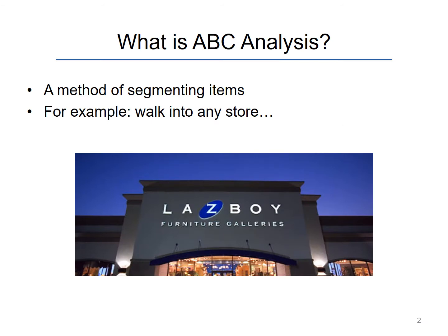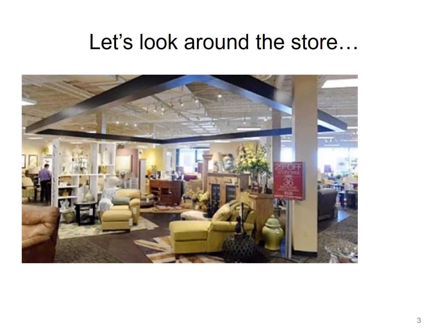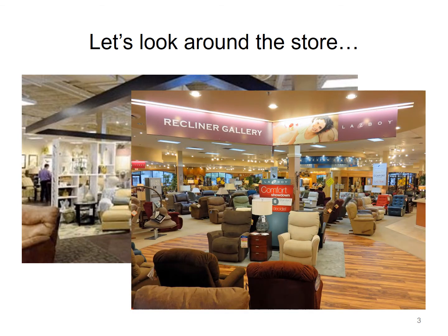For example, a furniture store like Lazy Boy carries many different types of products in its store. For those of you who aren't from the US, Lazy Boy is a very famous furniture store throughout the US. They're primarily known for their recliner chairs, which have gained in popularity throughout the US. So you walk through any Lazy Boy store and you'll see a vast number of products, especially recliners. That's what they're known for, but they also carry a lot of other products.